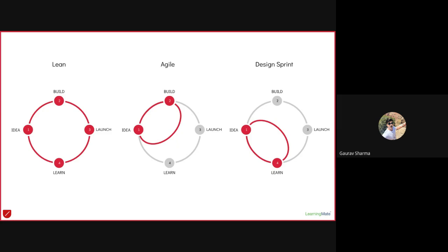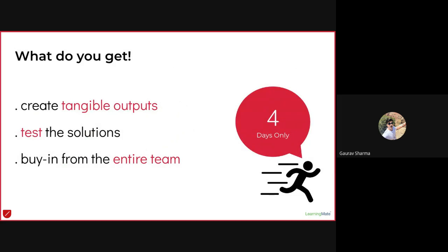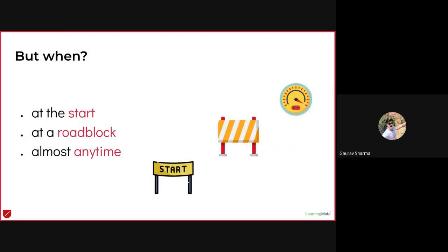What do you get in four days? You get to create tangible outputs — essentially prototypes — test your solutions designed as a team, and get buy-in from the entire team through collaboration. When do you want to do it? It could be at the start of a project where you don't know much, at any roadblock where you don't know what solution is needed, or when facing something really complex — that's where design sprints come in.